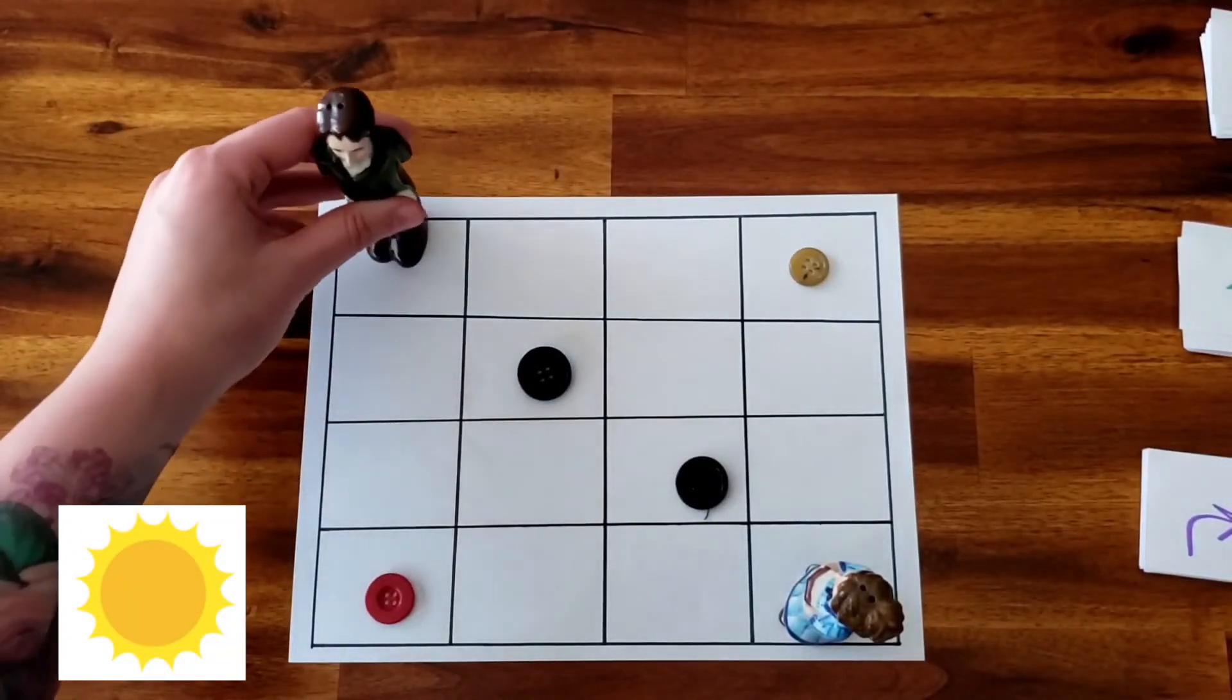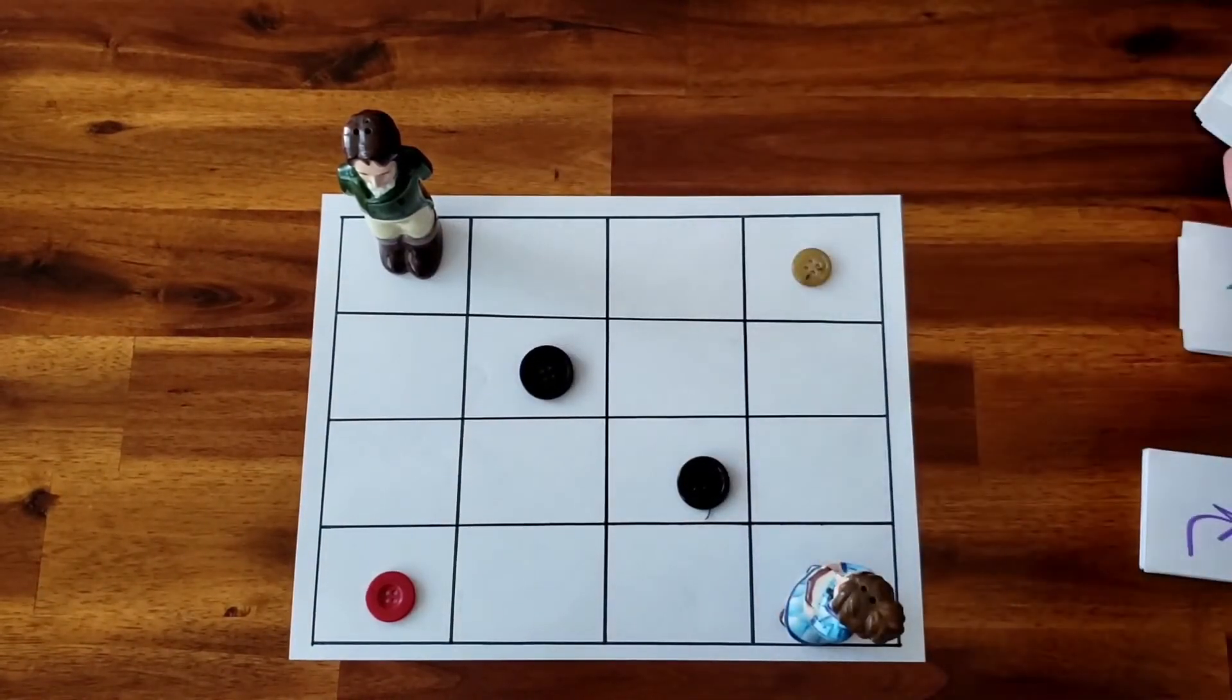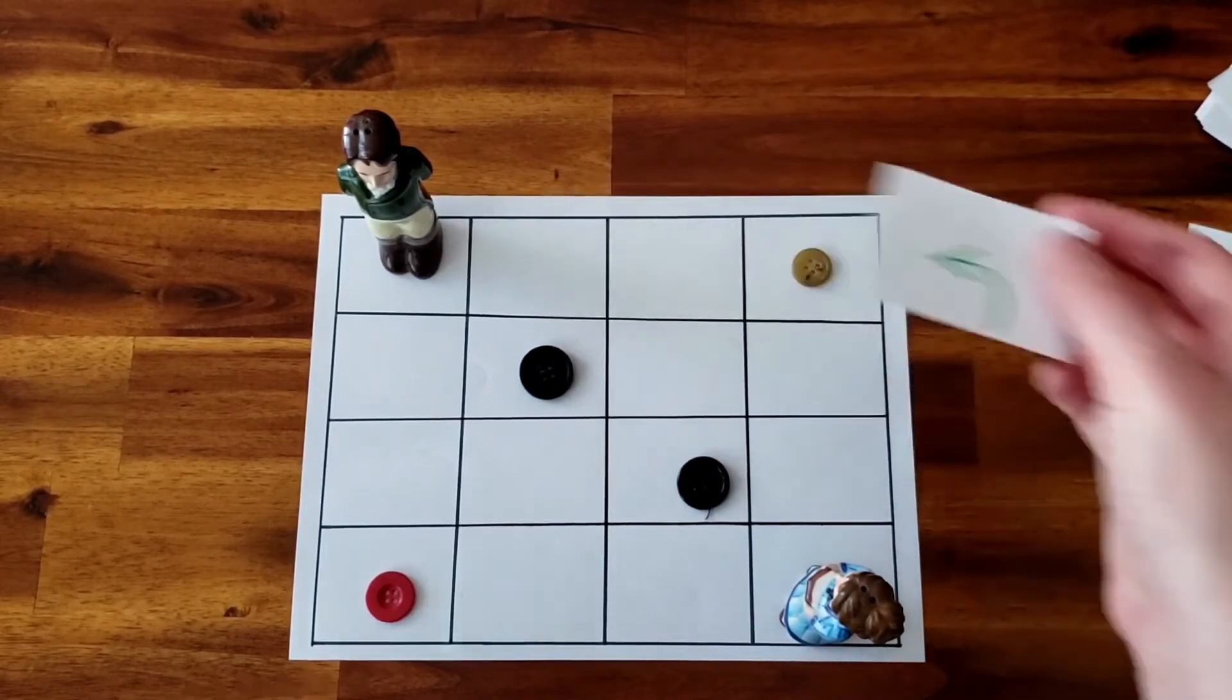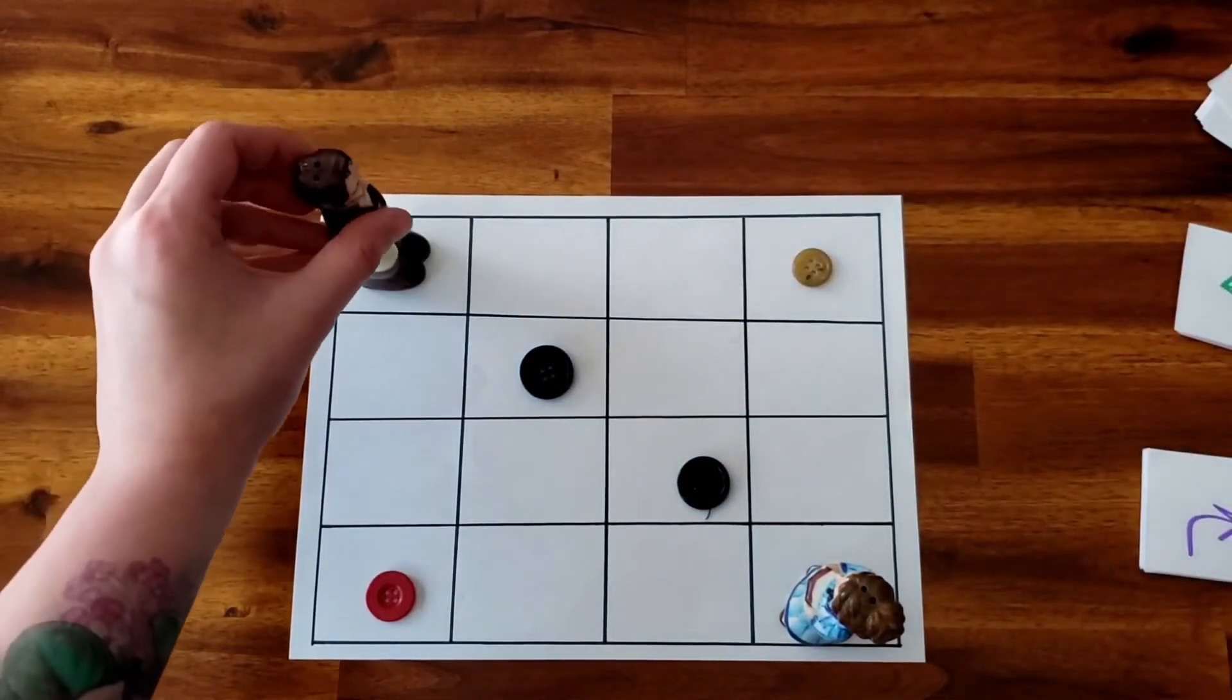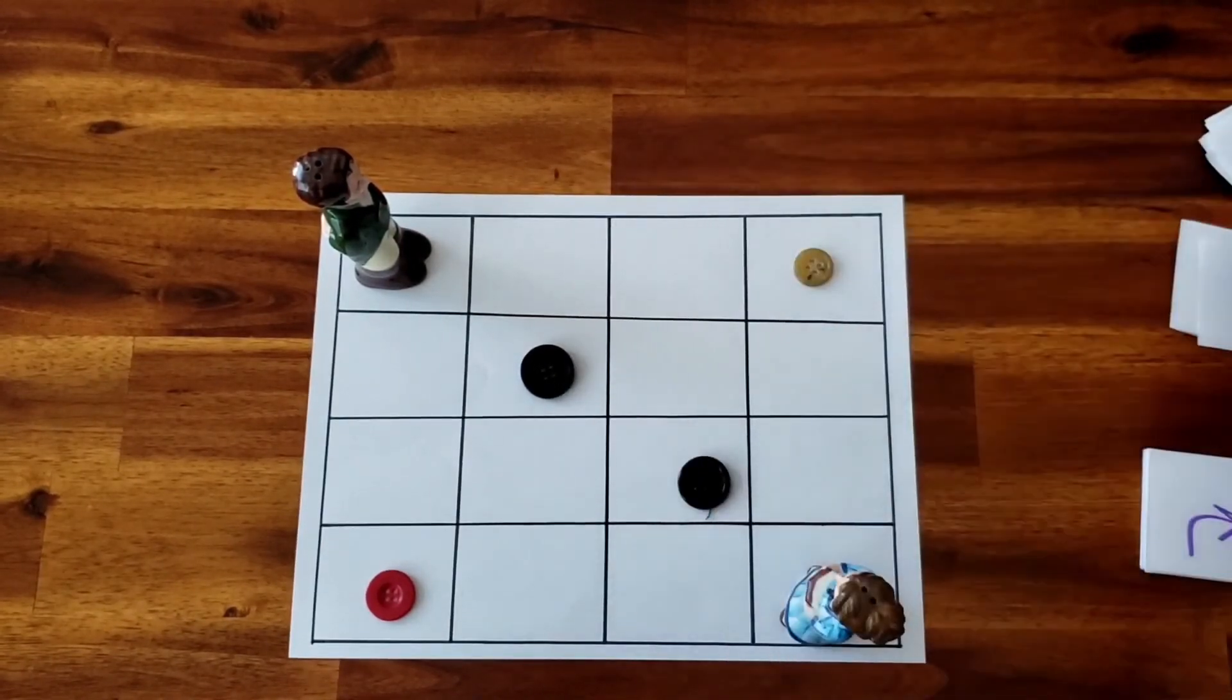Each block is one step or one forward arrow. Remember, when you do a turn, you turn in the square, but you don't get to move forward. You'd have to do a forward arrow first.